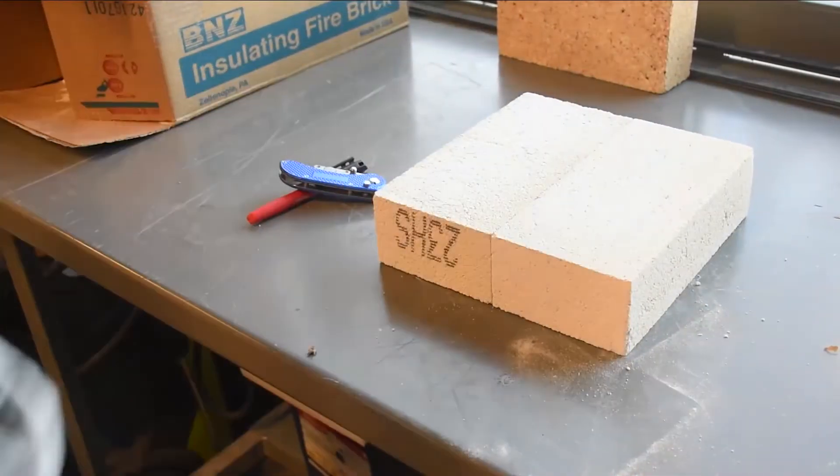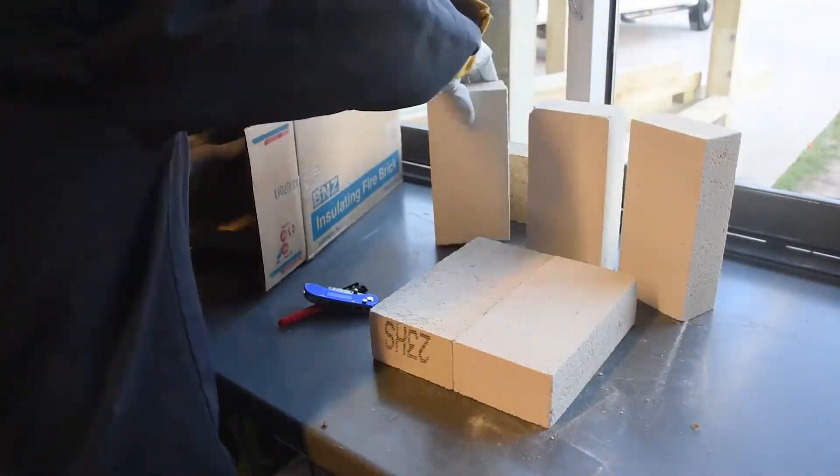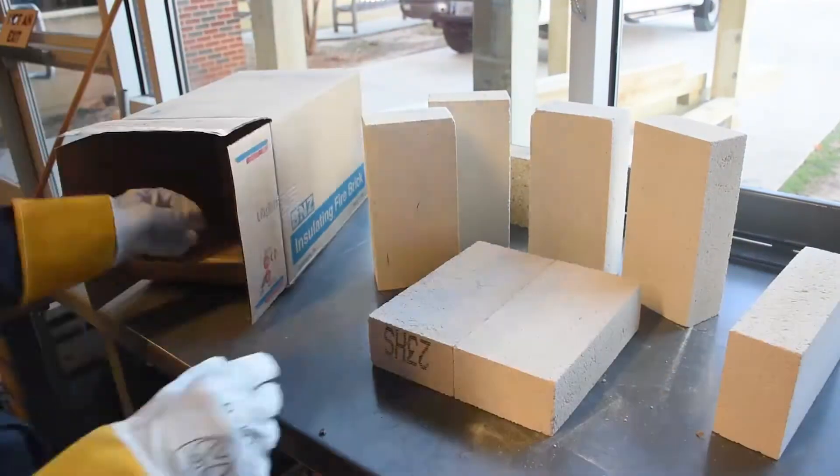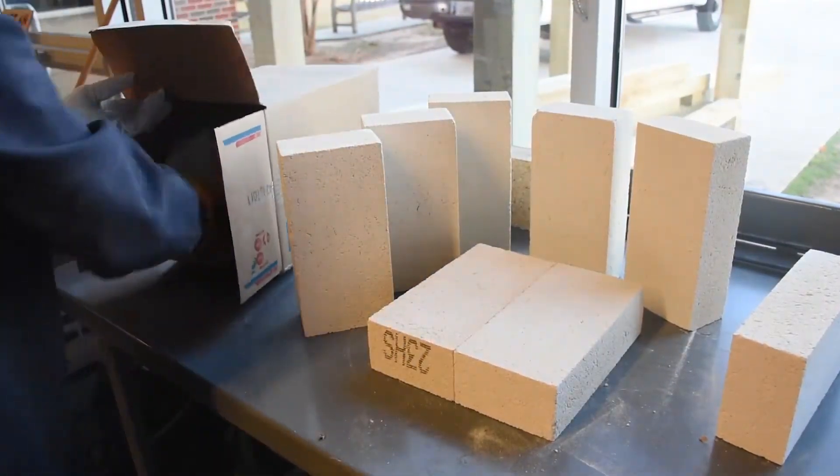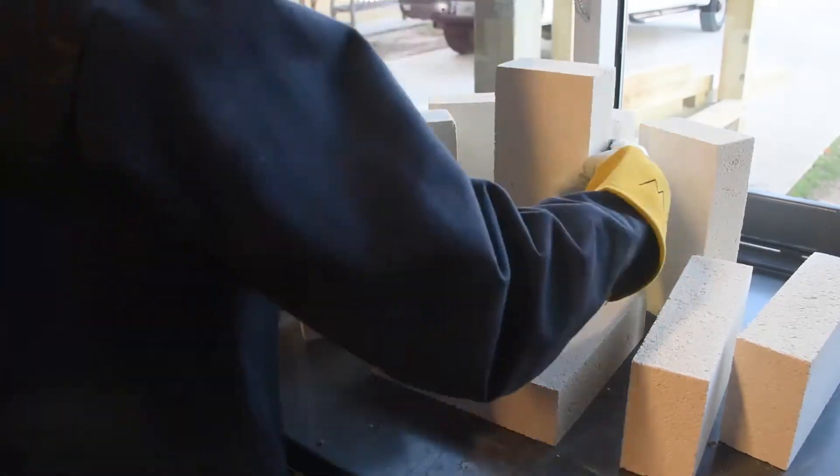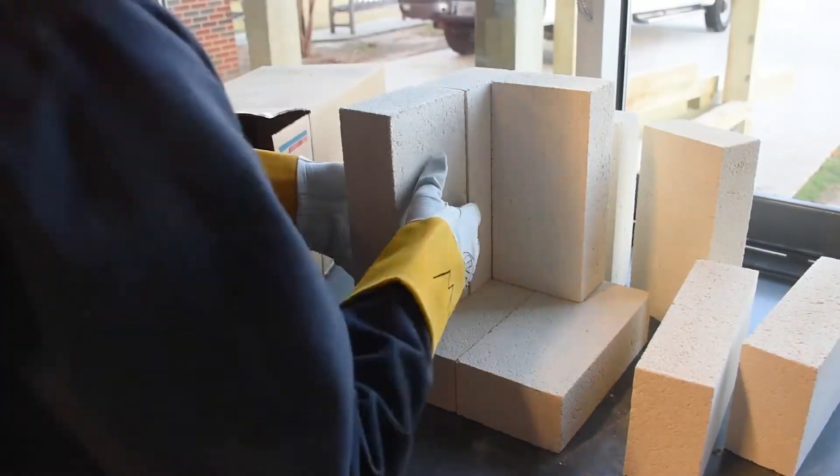These bricks are the K23s which is what my local refractory supplier had. This means they're good to 2300 degrees Fahrenheit. I would have rather had the 26s but that's a special order, and the 23s work just fine for aluminum.